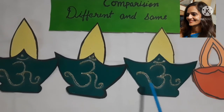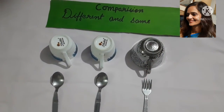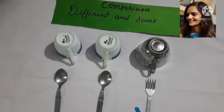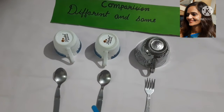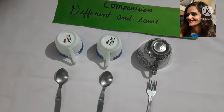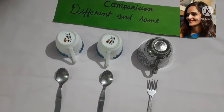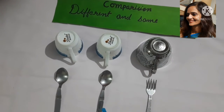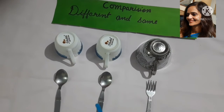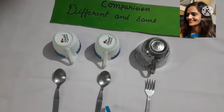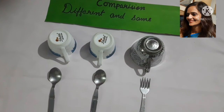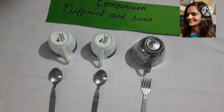Let's have a look at some objects. First: spoons and a fork. Can you see these spoons? The spoons are similar — same. And the fork is different. The fork is different.